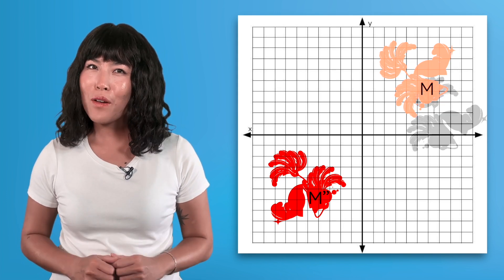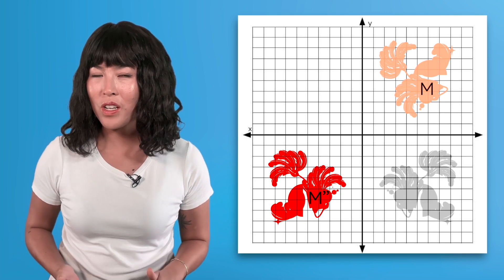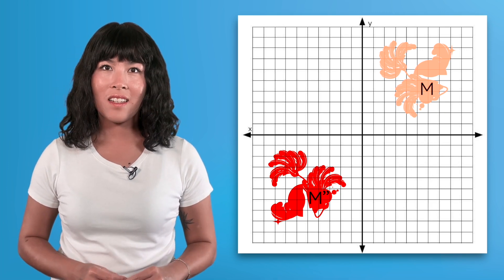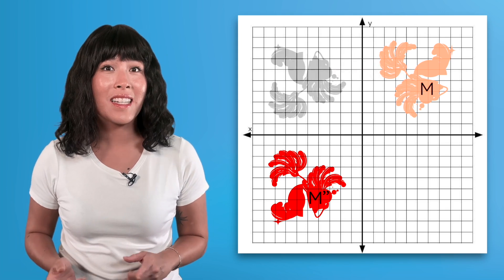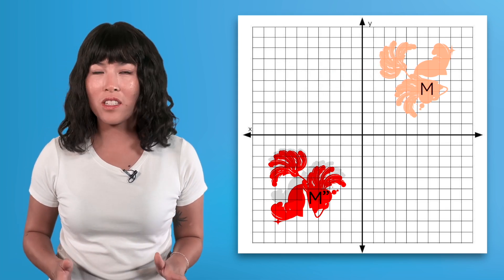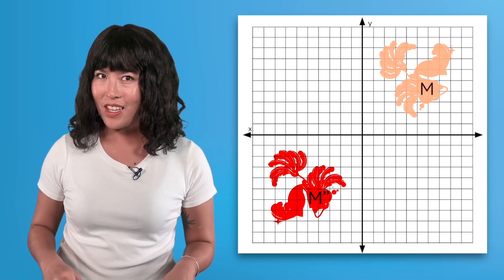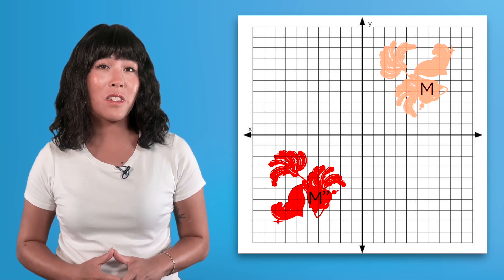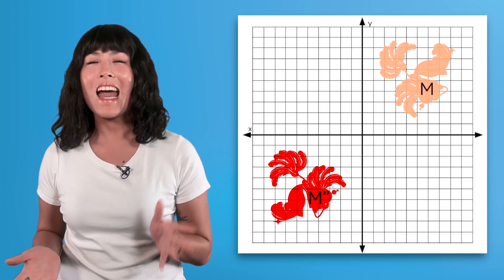Mia may have rotated 90 degrees clockwise around the origin and then reflected over the y-axis. Or Mia may have rotated 90 degrees counterclockwise around the origin and then reflected over the x-axis. Today, you're going to learn how to find these sequences of transformations between pre-images and images.